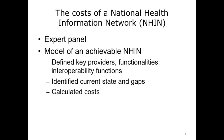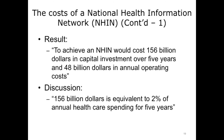An expert panel was convened to estimate the financial investment necessary to create a national health information network. The panel identified relevant providers, interoperability needs, goals, current state, gaps, and necessary funding. The result was that achieving a national health information network would cost $156 billion in capital investment over a five-year period and $48 billion in annual operating costs. While this seemed large, the authors noted that $156 billion is equivalent to only 2% of annual health care spending for five years, suggesting it may not be as exorbitant as it first appears compared to the total cost of health care.